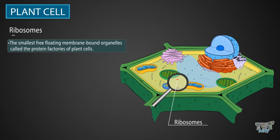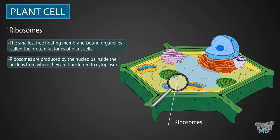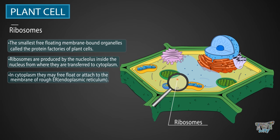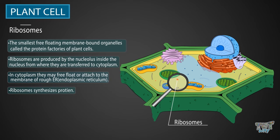Ribosomes are the smallest membrane-bound organelles, also called the protein factories of plant cells. You can see dots in the cell — these are ribosomes. Ribosomes are produced by the nucleolus inside the nucleus, from where they are transported to the cytoplasm. In the cytoplasm, they may be floating freely or attached to the membrane of the rough ER, that is, the rough endoplasmic reticulum. It is here where ribosomes synthesize protein. We will learn about the synthesis of protein by ribosomes in our higher grades.